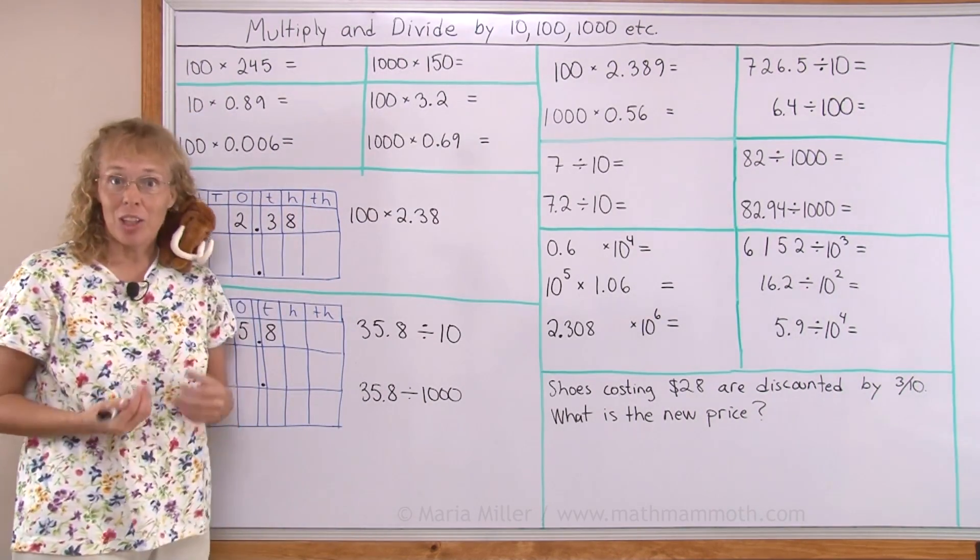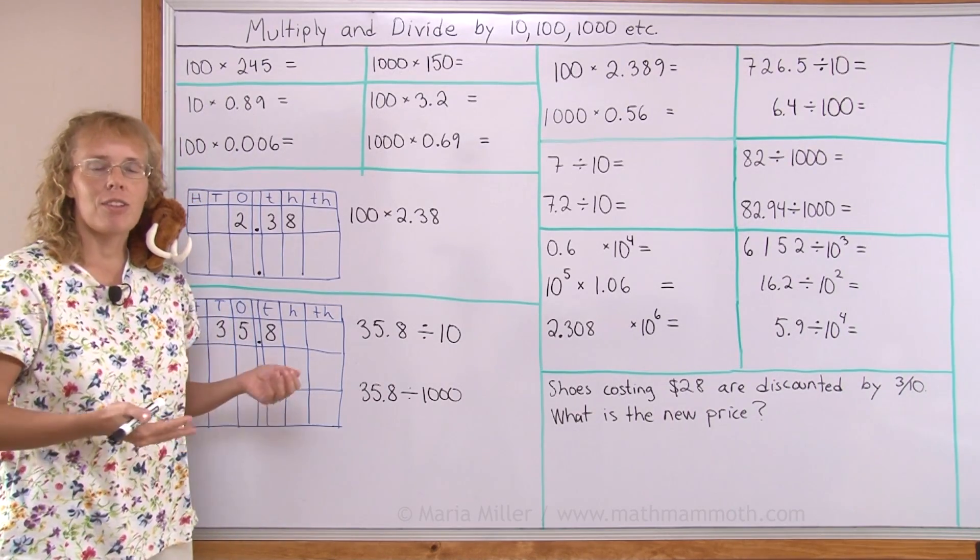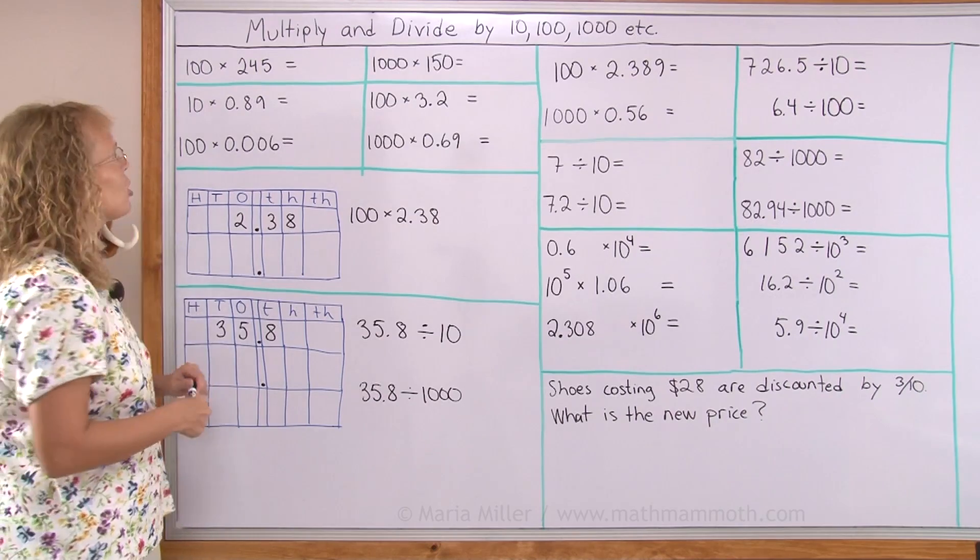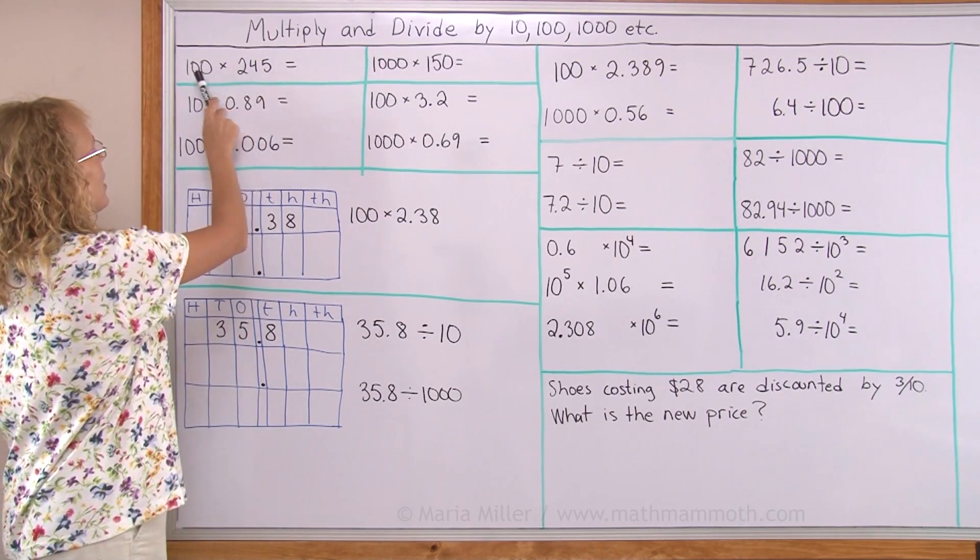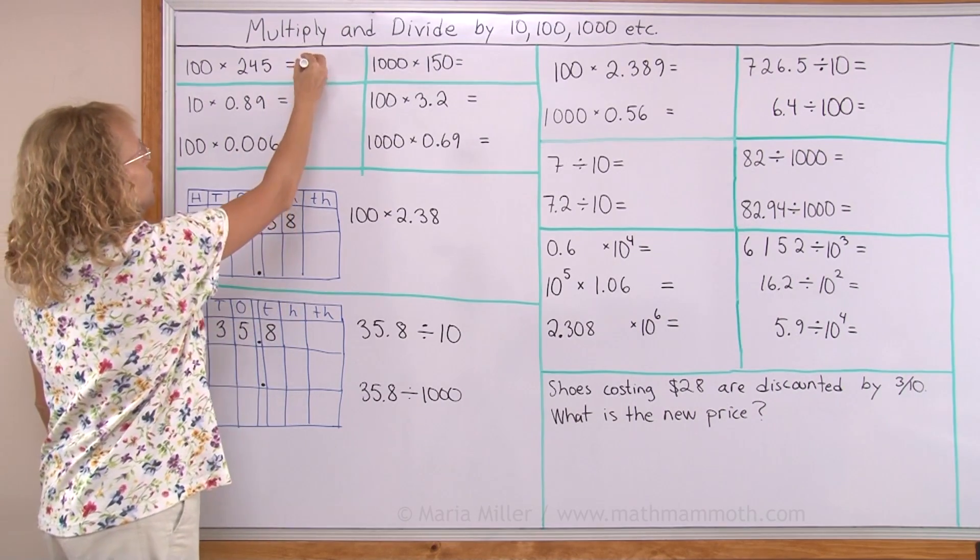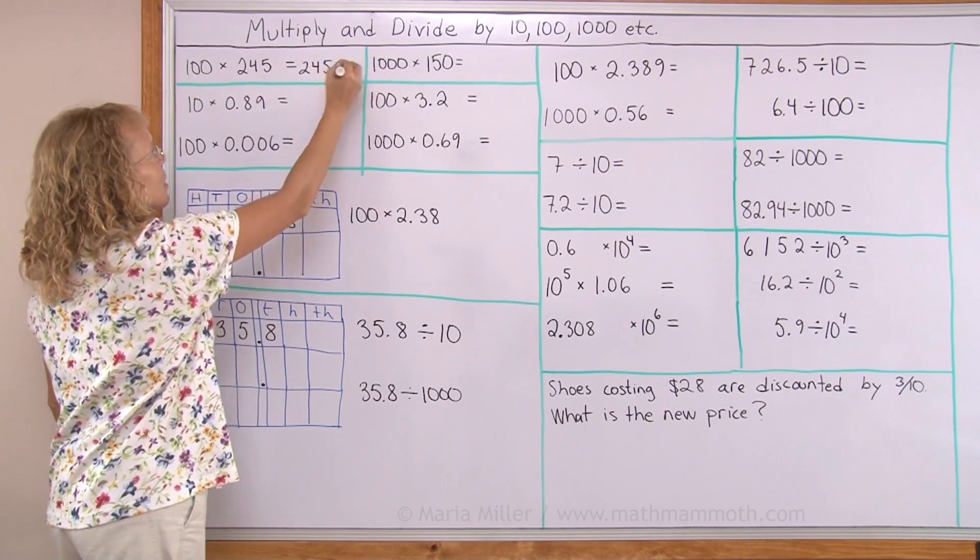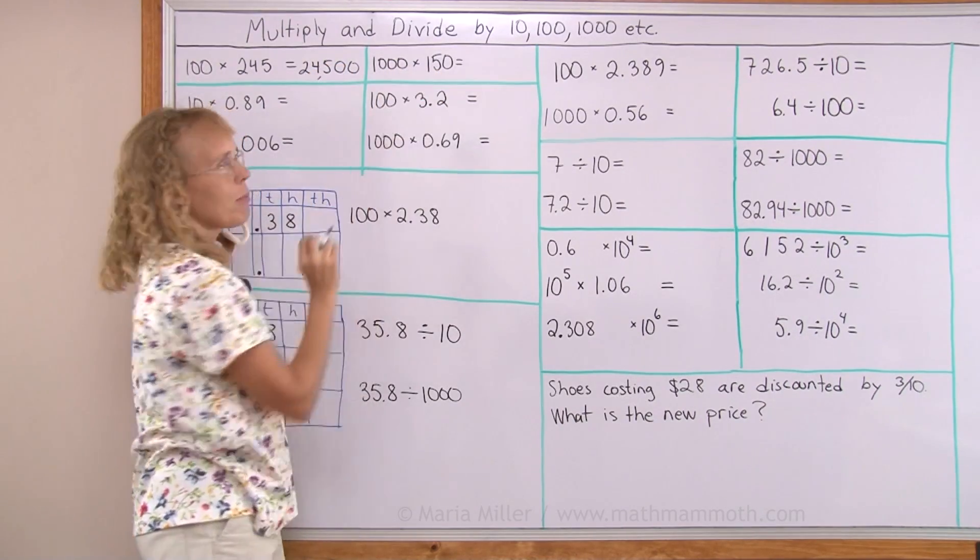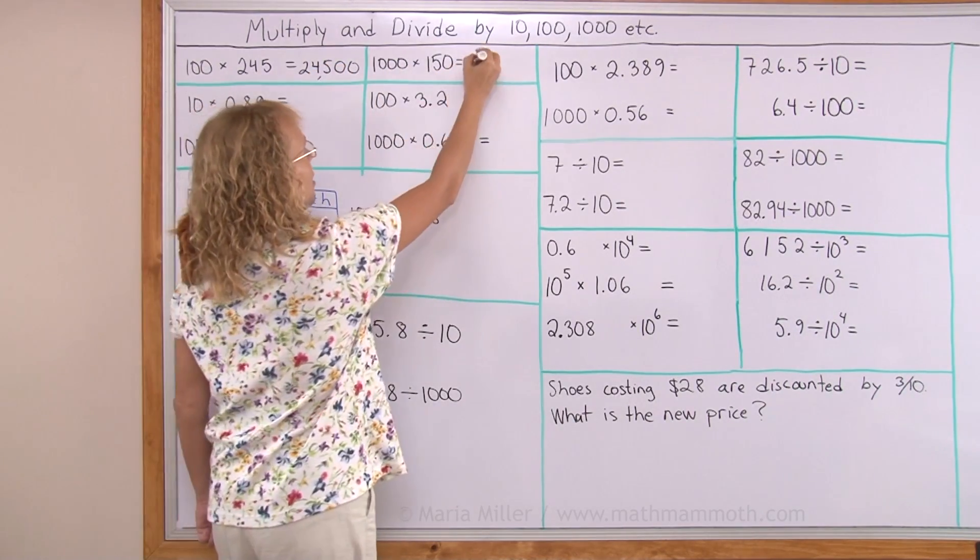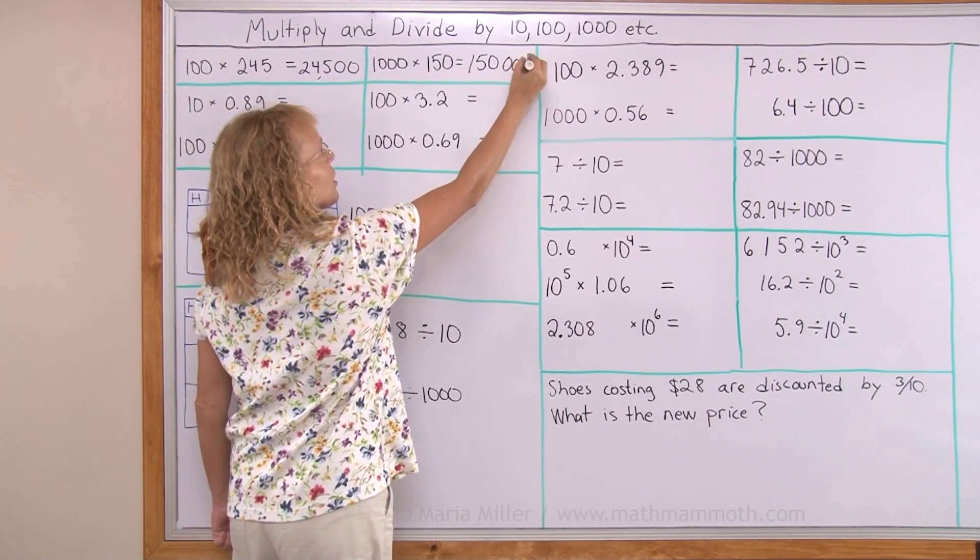You should already know that when we multiply whole numbers by 100 or 10 or 1000, there's a shortcut, which is that you just take the number and then tag the zeros after it. So you write 2, 4, 5, then you write two zeros after it. That's your answer. Or if you multiply a number by 1000, then you write the number and after it write how many zeros are here, three zeros this time.